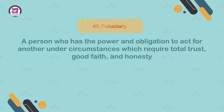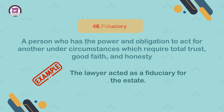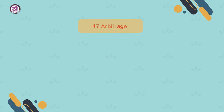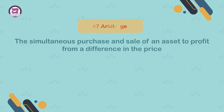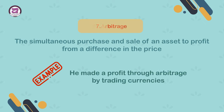46. Fiduciary. A person who has the power and obligation to act for another under circumstances which require total trust, good faith and honesty. Example: the lawyer acted as a fiduciary for the estate. 47. Arbitrage. The simultaneous purchase and sale of an asset to profit from a difference in the price. Example: he made a profit through arbitrage by trading currencies.